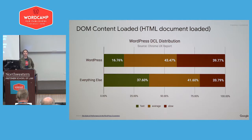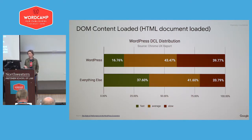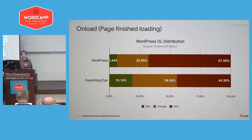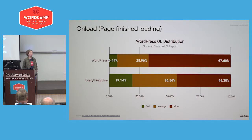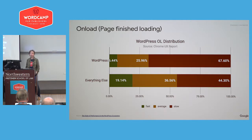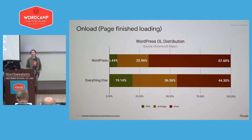The next metric, with similar results, is DOM Content Loaded — meaning the HTML document is loaded, though stylesheets and images may still be coming in. WordPress at large is slower than everything else. The last metric is on-load, when the page has finished loading. There the margin is even wider. When you've got something like 68% of users experiencing WordPress sites having a slow on-load experience, versus 44% for other sites, this is basically a visual representation of the janky web.